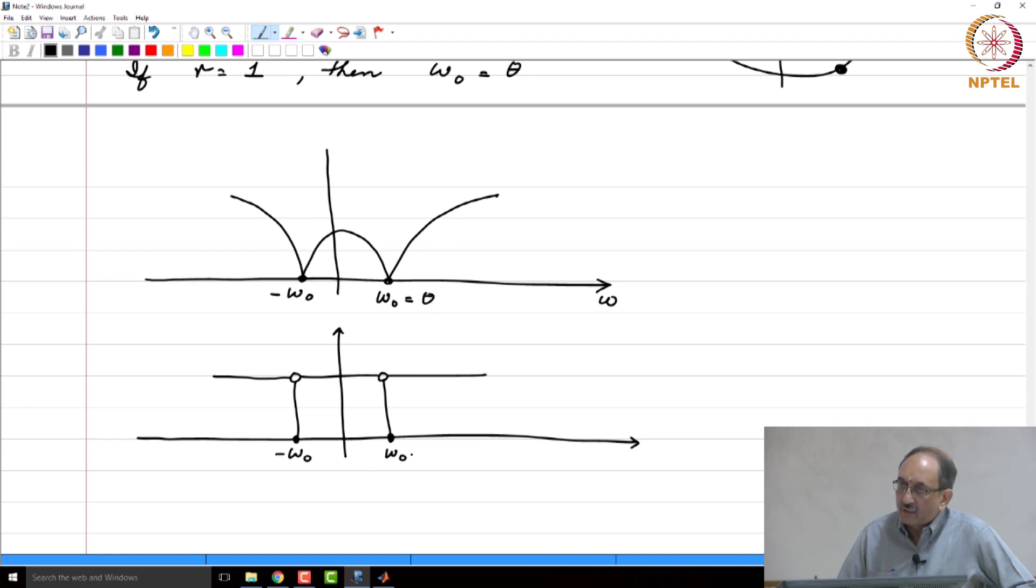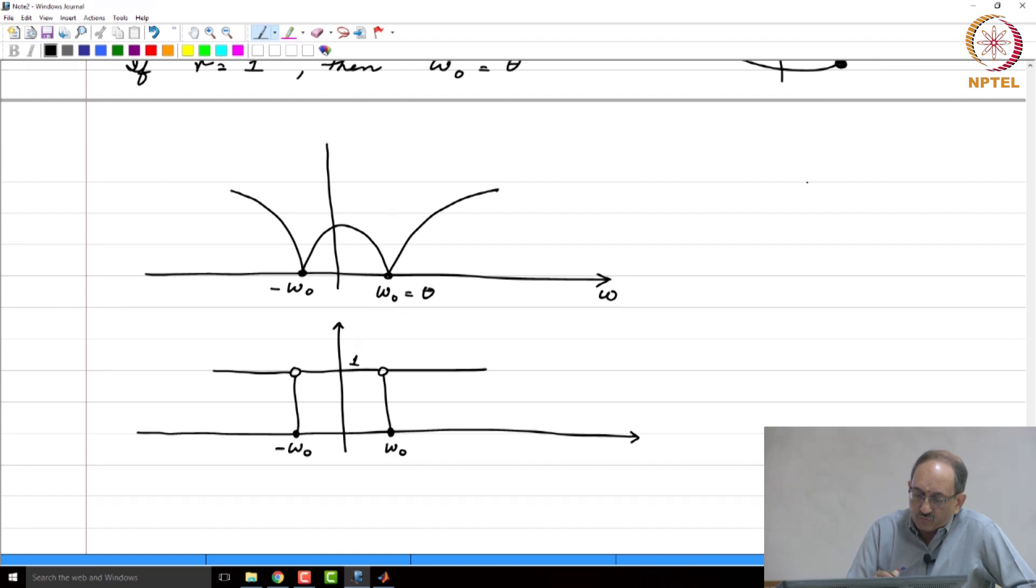This is how the ideal notch filter's response is, it goes to 0 at plus and minus omega naught. And, the response immediately comes back to 1 for every other frequency. And, as you can see from this curve, this is far from ideal. It is far from ideal, because as you go away from omega naught, the response does not rapidly come back to 1. Ideally, it should instantly come back to 1, at least you want it to come back to 1 rapidly and this is too slow. So, what can you think of based on what you have studied so far to make the gain come back to 1 as quickly as you can make it happen?